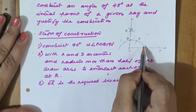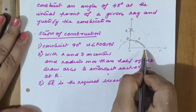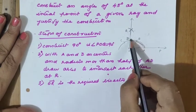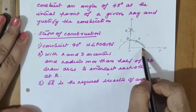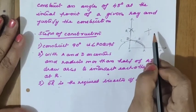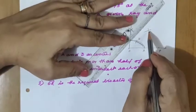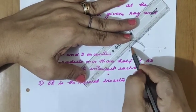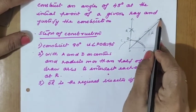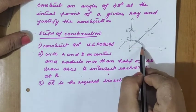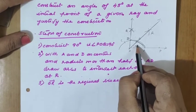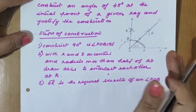The arc is making an angle of 90 degrees. With A and D as centers, we draw the angle bisectors — taking more than half of AD and drawing two arcs. Joining through O, we get ray OR as the required bisector. The 90 degrees is bisected into two equal parts, so each part is 45 degrees. OR is the required bisector.